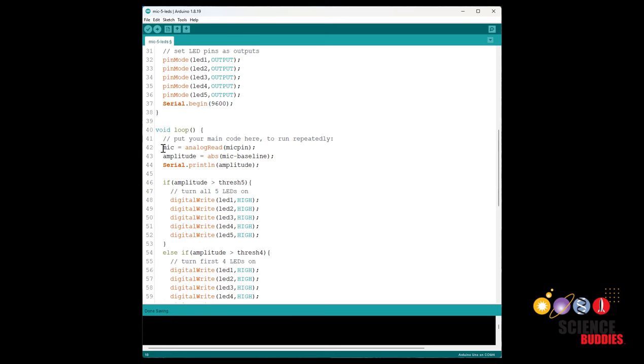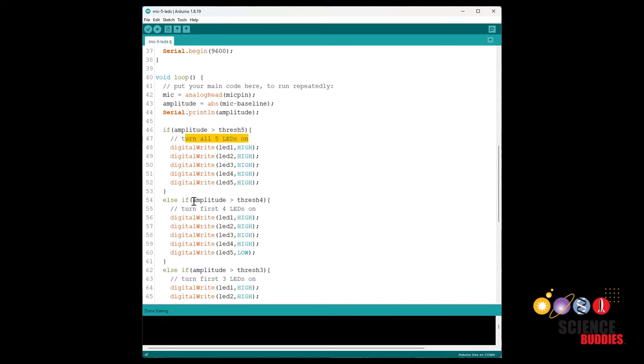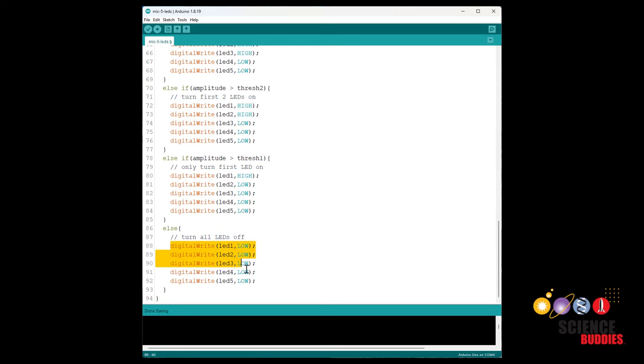And then here in the loop function, I simply have two lines of code: one to read the analog input from the microphone pin, and then one to calculate the amplitude, which again, I am taking the absolute value of the mic reading minus that baseline value. So remember that this difference can be negative because your mic reading can be below that baseline value. So I want to take the absolute value to just see how big the sound is or how loud the sound is. Then I'm going to print out that value to the serial monitor so I can use it for debugging. And then I have a series of if statements that again are controlling the LEDs. So if the amplitude is greater than the maximum threshold, I turn all five LEDs on, else if it's only greater than threshold number four, I'm going to turn four of the LEDs on and so on, all the way down to just turning all of the LEDs off because the sound amplitude is below the first threshold I set.